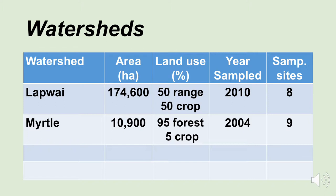Myrtle Creek — we go all the way up to the northernmost county in the state, Boundary County. This watershed consisted of 10,900 acres and was 95% forest land, with 5% cropland near the mouth of Myrtle Creek. It was sampled in 2004 and had nine sampling sites.